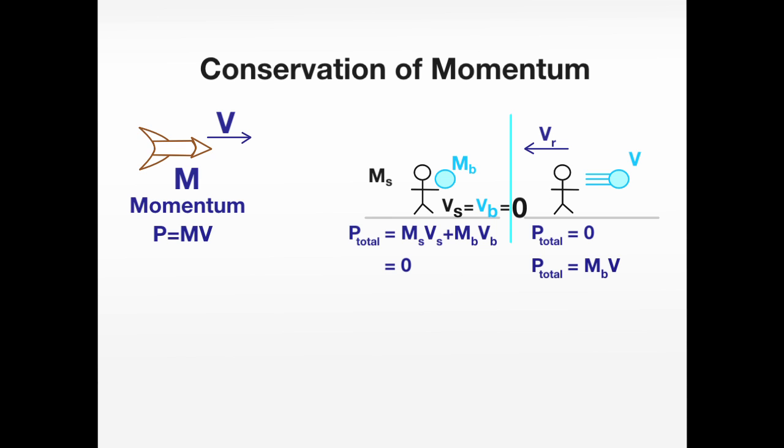So we say that the skater has this new velocity, vr, or v recoil, and for that to come out to be zero, like we need by conservation of momentum, we find that v recoil is equal to mb over ms times the velocity of the ball.